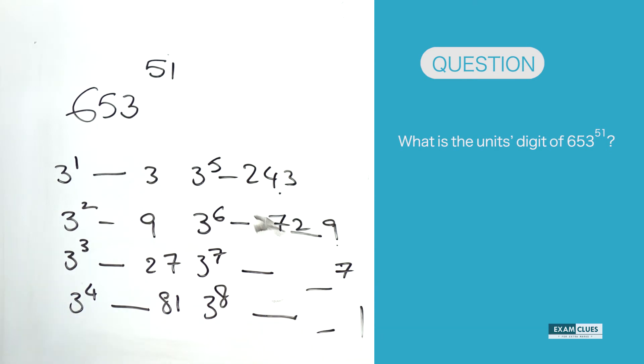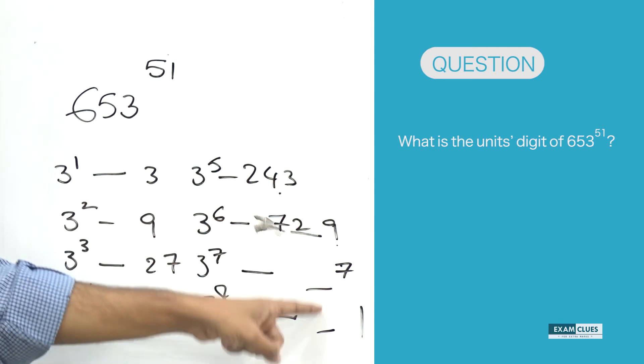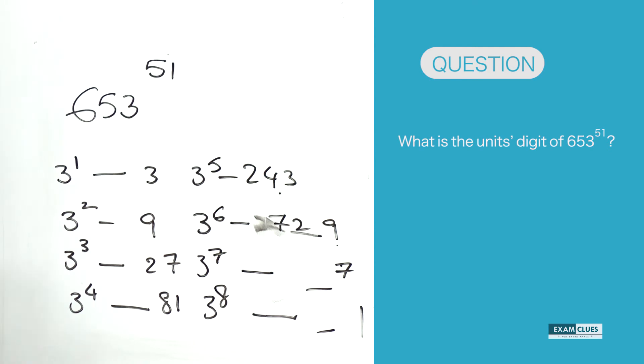So if you see this, the powers of 3 have a cyclicity for their last digits as 4. They occur in some kind of cycle: 3, 9, 7, 1, 3, 9, 7, 1.